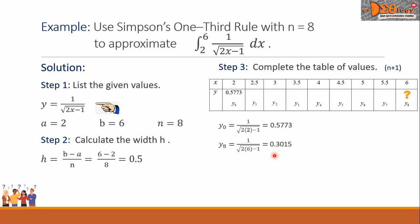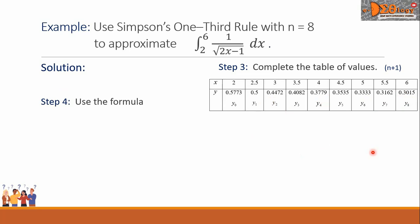We can fill the values for y using this pattern and we have these values here. Now we can go to step 4 using the formula of Simpson's one-third rule. And this is now the formula. We substitute the corresponding values and it becomes like this.